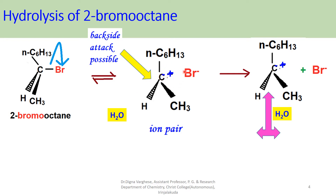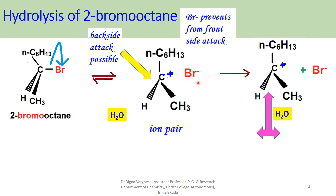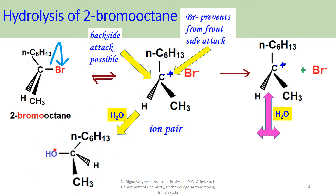There is also a possibility for the front side attack. But here in the ion pair, the bromide ion prevents the front side attack of the nucleophile. So here only a backside attack is possible. You can see an inversion product obtained by the backside attack of the nucleophile, which is a water molecule. The nucleophile OH⁻ forms from water and attacks the carbocation from the backside, forming an inversion product — that is, plus-octan-2-ol.